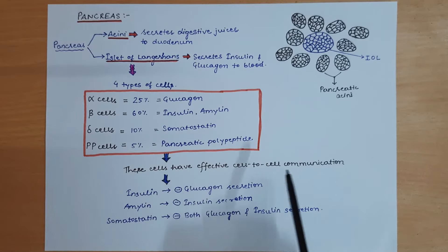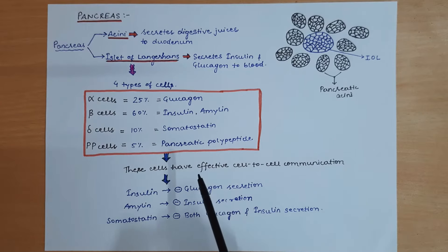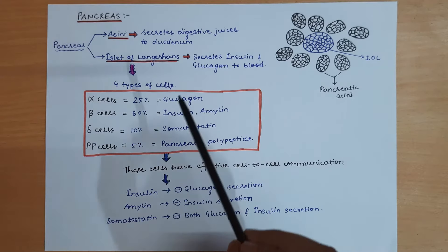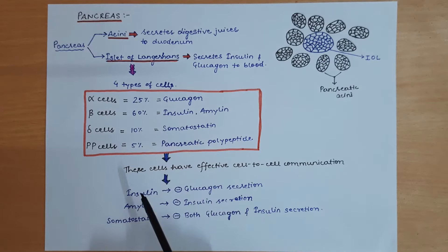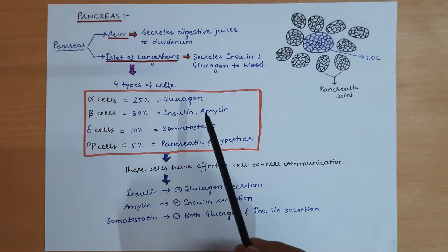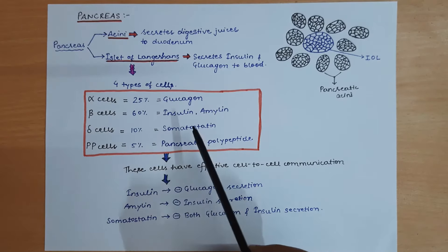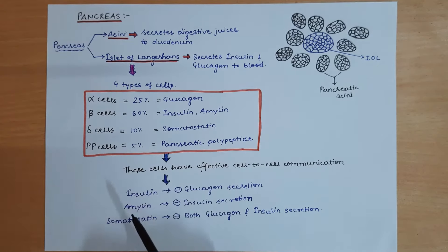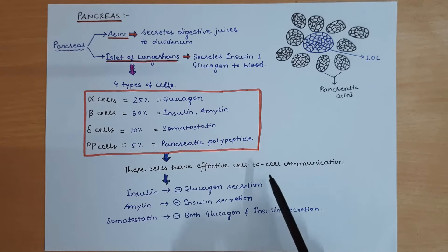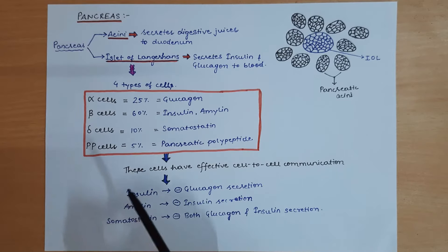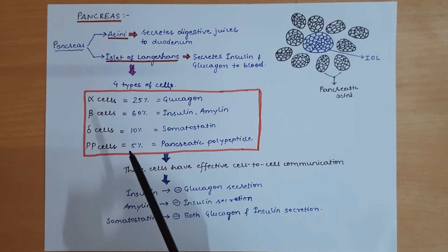There is effective cell-to-cell communication between these cells. These hormones can stimulate or inhibit one another — for example, insulin, amylin, and somatostatin can all inhibit each other's secretion as per requirement.